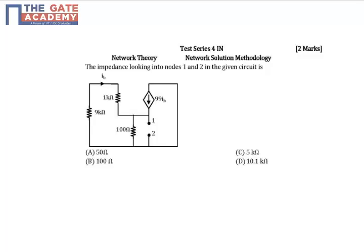In this question we have to determine the Thevenin's impedance across the terminals 1 and 2. Since in this circuit we have a dependent current source, we cannot go by the conventional method of replacing a current source by an open circuit.